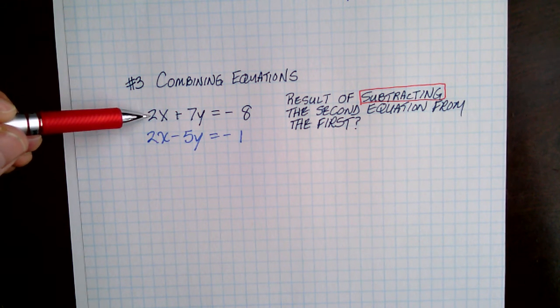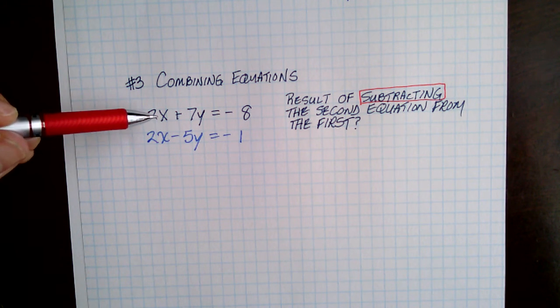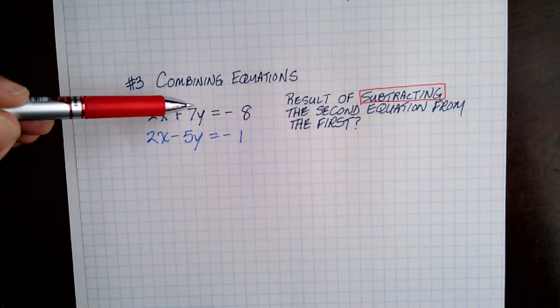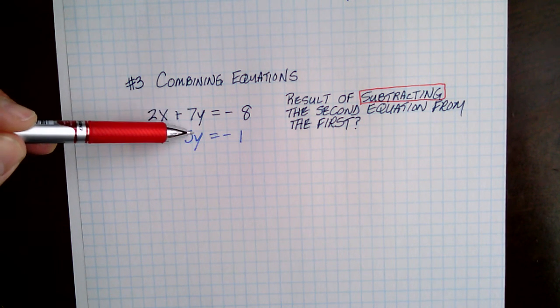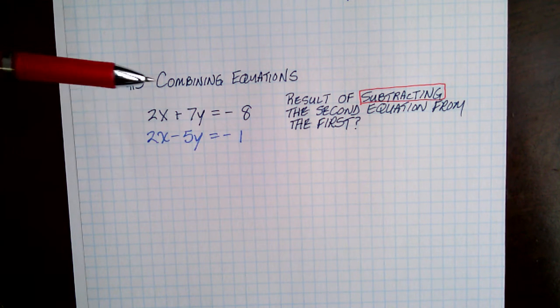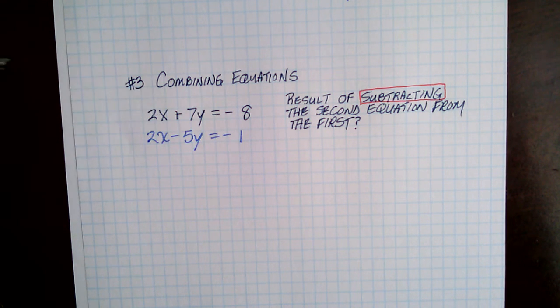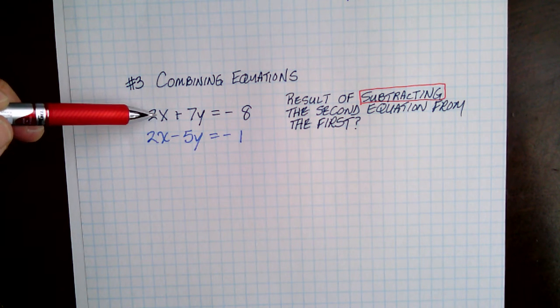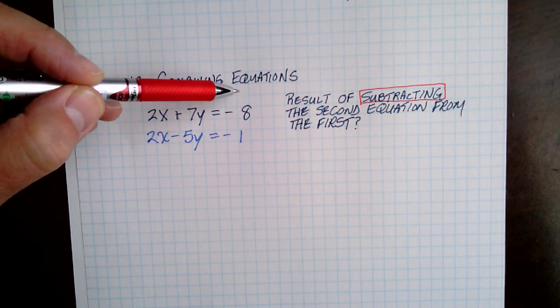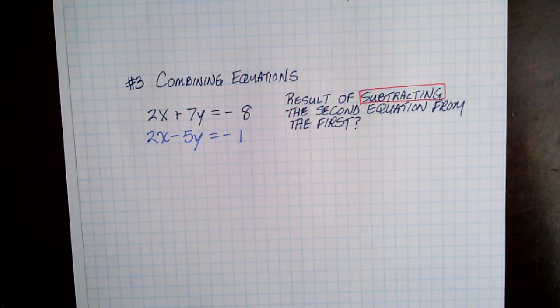So here we have two linear equations that are in standard form, which means the x value is first, the y value is the second term, and it equals a quantity or a number value or a c value. So lining everything up in standard form so that you have your x column, your y column, and then your z or your c column or the number column lined up is important.